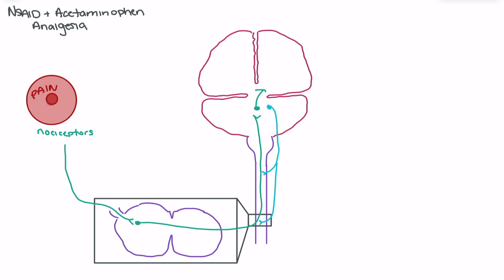This is called the descending inhibitory pathway. And then we have our somatosensory pathways that provide the sensation of pain. So this is the ascending sensory pathway.